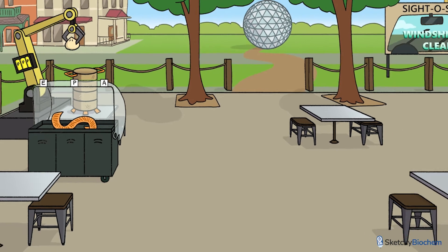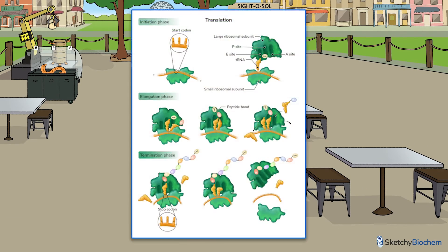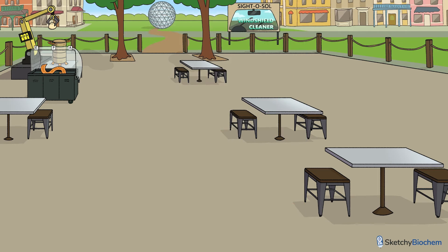With that basic info out of the way, let's start translating. There are three stages of translation: initiation, elongation, and termination. Each of those is exactly what it sounds like. We'll keep bringing these up as we go through the steps.